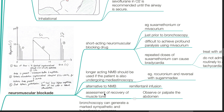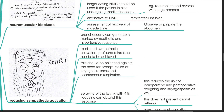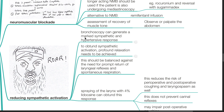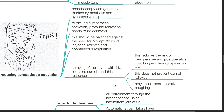Remifentanil infusion is an alternative to neuromuscular blockade. Assessment of recovery of muscle tone can be done by observing or palpating the abdomen. Bronchoscopy can generate a marked sympathetic and hypertensive response. To obtund sympathetic activation, profound relaxation needs to be achieved, balanced against the need for prompt return of laryngeal reflexes and spontaneous respiration. Spraying the larynx with 4% lidocaine can obtund this sympathetic response, reducing the risk of perioperative and postoperative coughing and laryngospasm. However, this does not prevent carinal reflexes and may impair postoperative coughing.